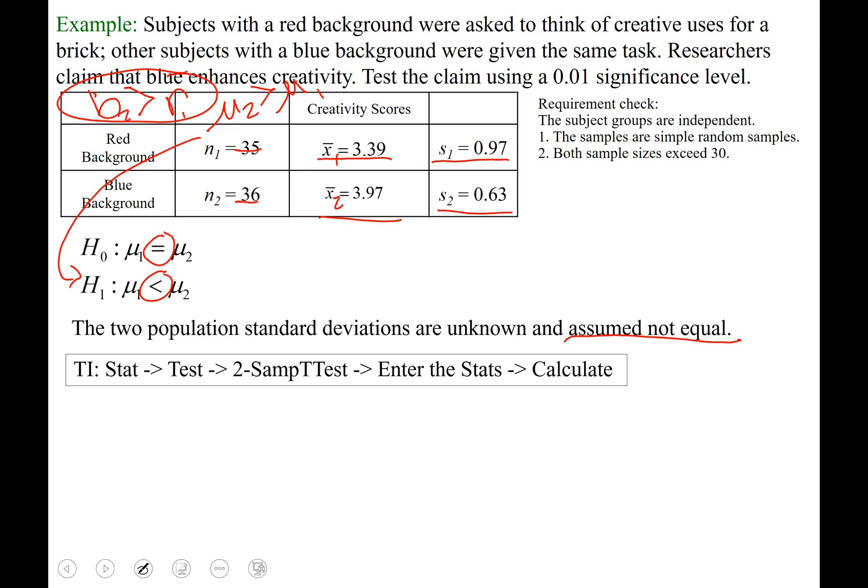X sub 1 is 3.39. Lowercase s sub 1 is 0.97. N sub 1 was 35. Now population 2: X bar sub 2, 3.97. S sub 2, 0.63. And the sample size for pop 2, 36. Next thing it wants from us is the inequality that we used, and we chose the less than. So make sure that one's highlighted.